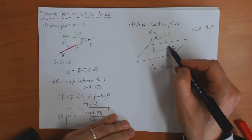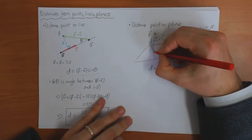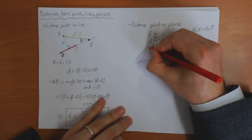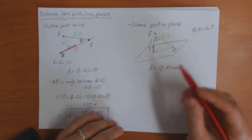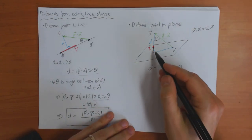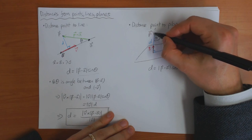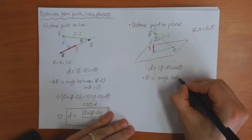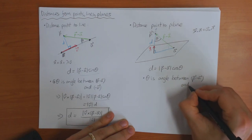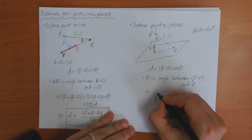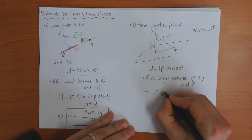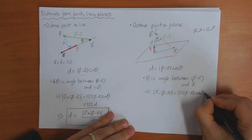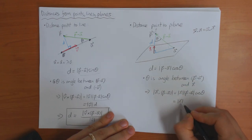The reason I chose theta to be this angle is that the normal vector N points perpendicular to the plane, so theta is the angle between N and P − A. Using the scalar product, N · (P − A) = |N| · |P − A| · cos θ, and what you have here is just |N| · D.